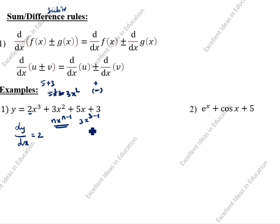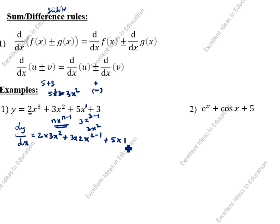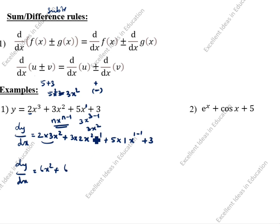3x² differentiates to 3·2x^(2-1) = 6x. Plus 5·1·x^(1-1): 5 into 1 is 5, x^0 is 1, so 5. Plus 3: differentiation of constant is 0. dy/dx = 6x² + 6x + 5 + 3. Simplifying: 6x² + 6x + 5 (plus 3 remains). This is the answer.